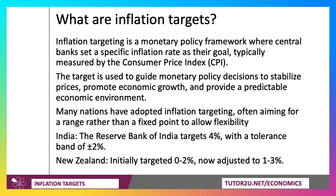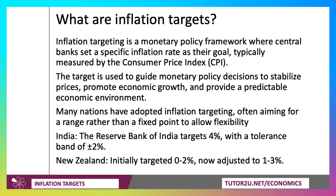Many nations have adopted inflation targeting — not always a fixed point, but sometimes a range. The Reserve Bank of India targets 4% inflation, but with a tolerance band of plus or minus 2%. New Zealand, one of the first central banks to introduce inflation targets, initially targeted 0% to 2%, but has now adjusted to 1% to 3%.